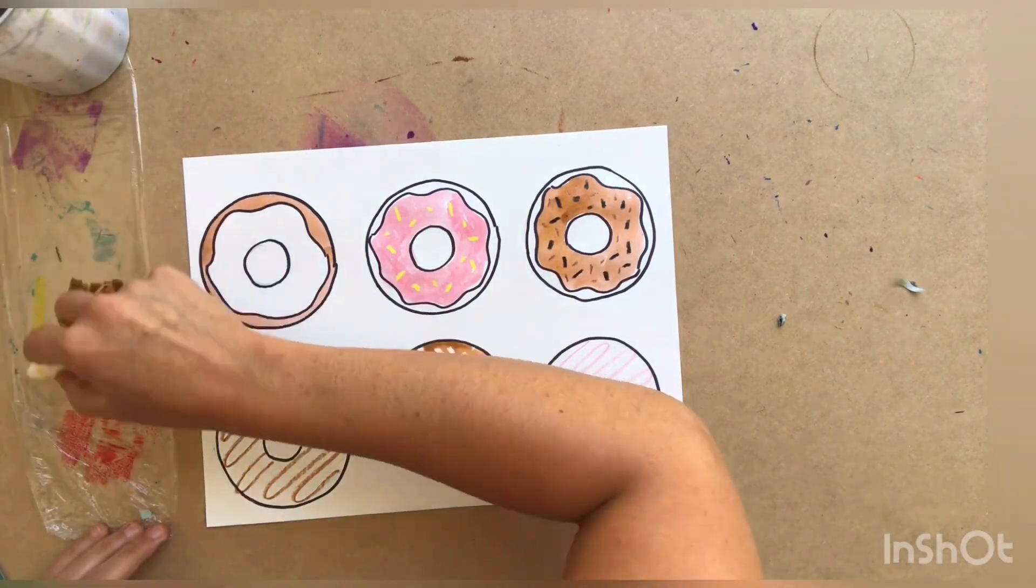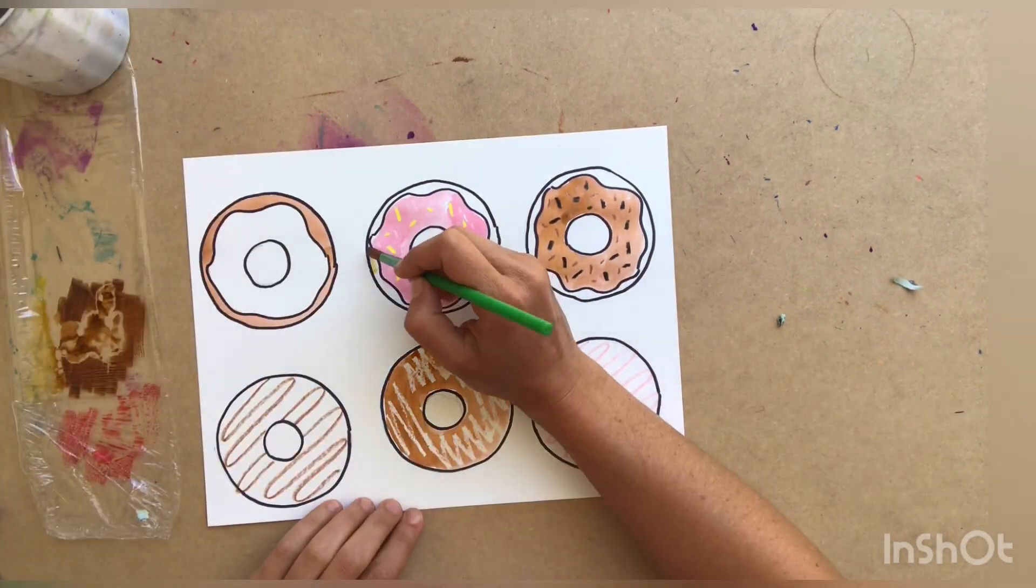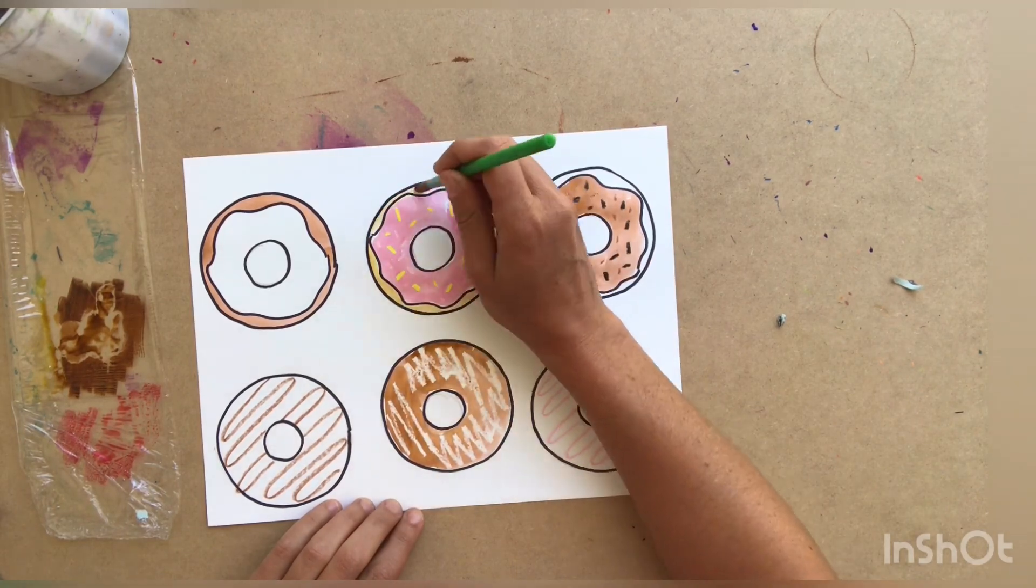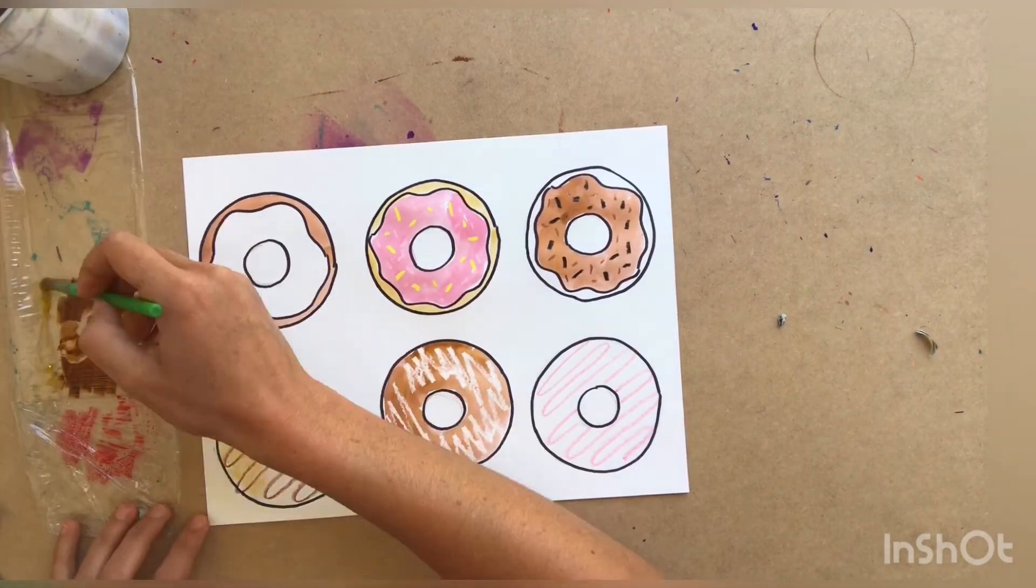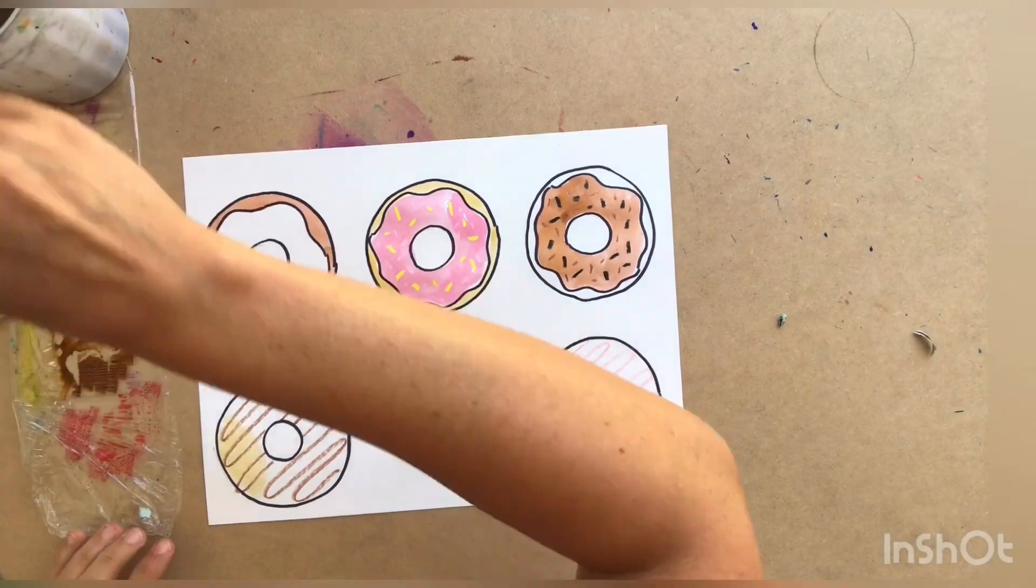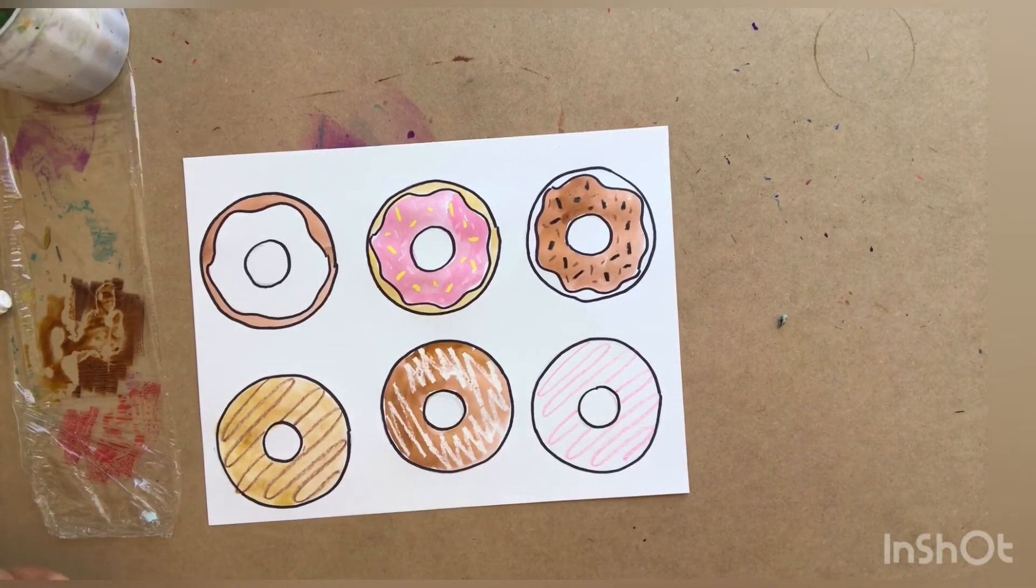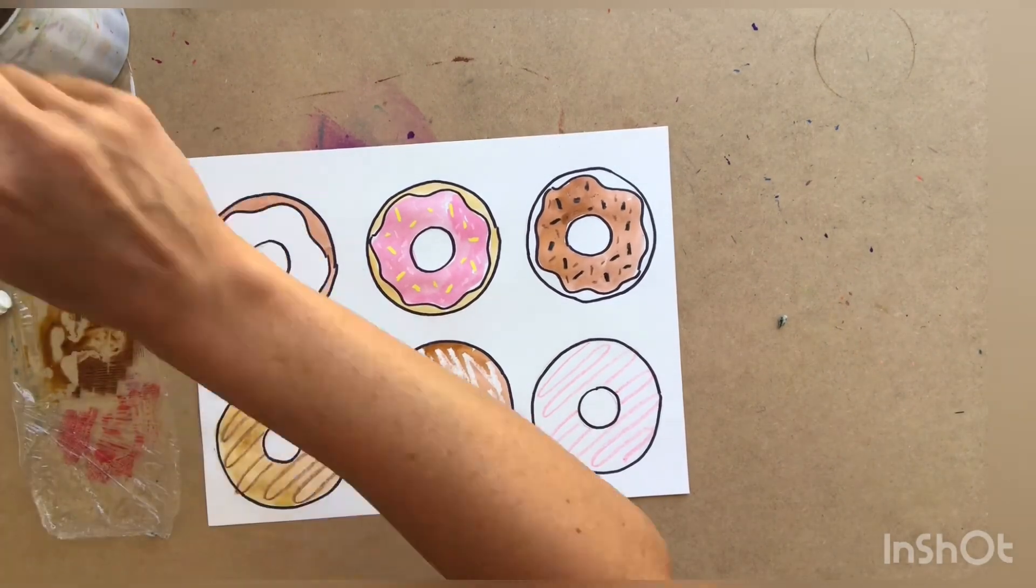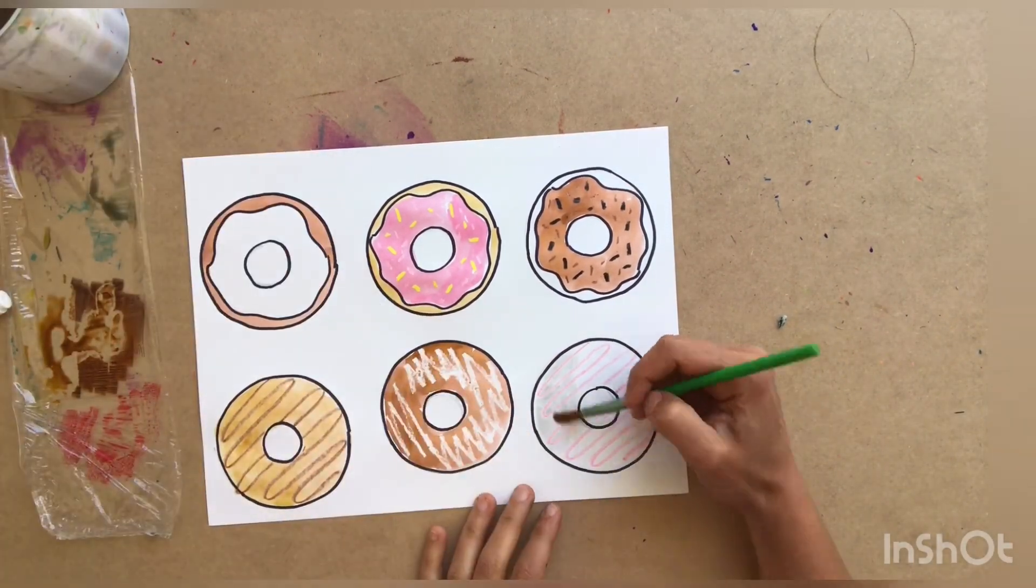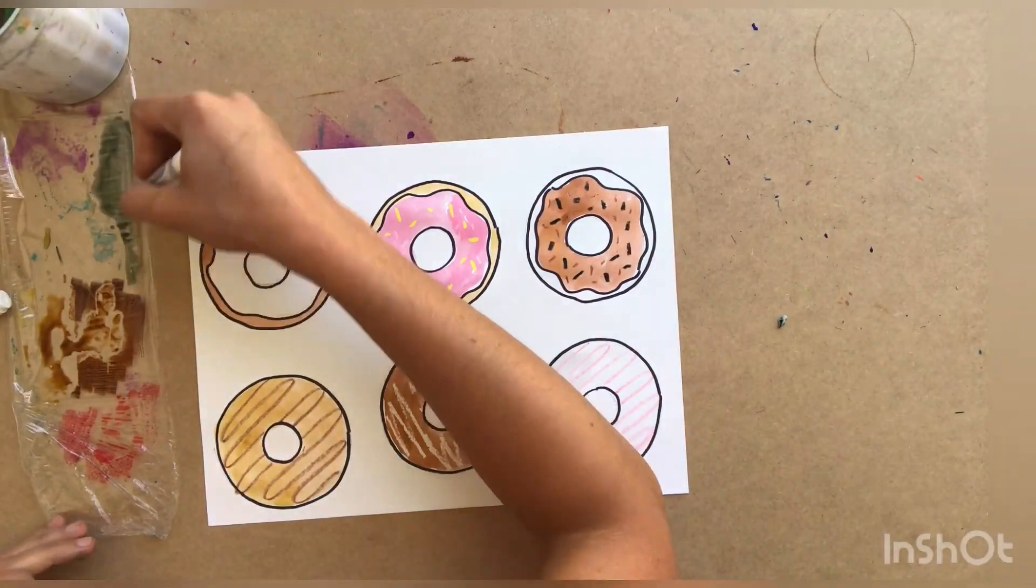You'll notice now I'm going to be using some yellow and a little bit of brown to create my cake doughnut or my vanilla doughnut. Continue painting all of your doughnuts until they're all filled in and colorful.